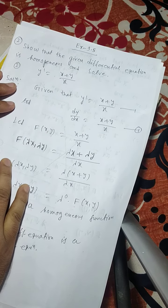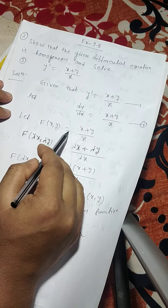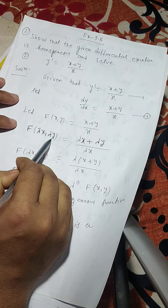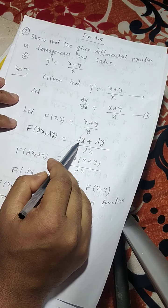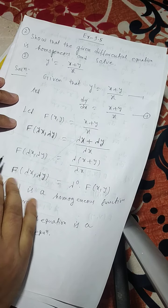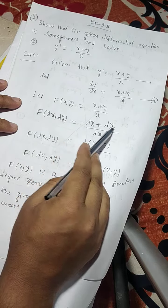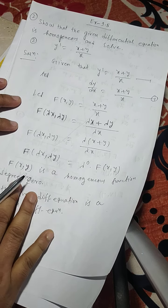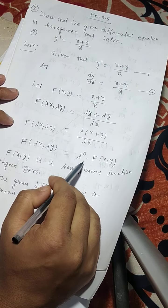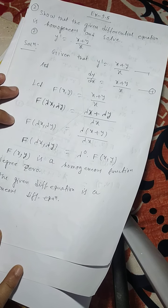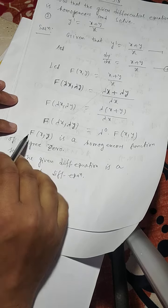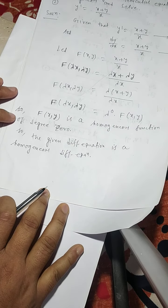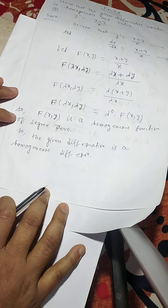Let capital F of x, y equals to (x + y)/x. Here x is replaced by lambda x and y is replaced by lambda y. So F of lambda x, lambda y equals to (lambda x + lambda y) divided by lambda x. Here lambda is a common factor, giving lambda·(x + y) divided by lambda·x. Therefore F of lambda x, lambda y equals to lambda to the power 0 times f of x, y. So f of x, y is a homogeneous function of degree 0, and the given differential equation is a homogeneous differential equation.